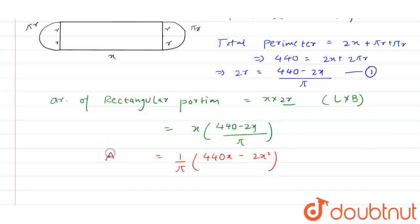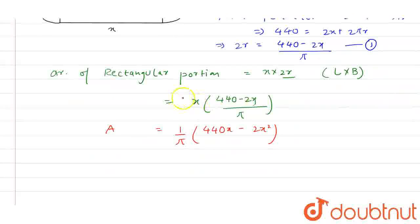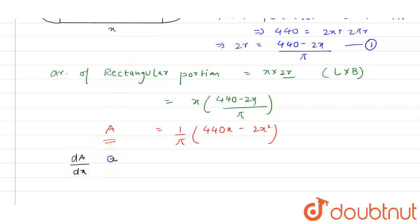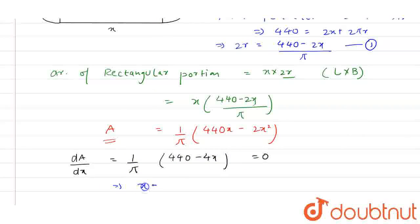This is the area. To maximize this area, we differentiate A. So dA/dx is equal to (1/π)(440 − 4X) = 0. From here we can say that X is equal to 110.